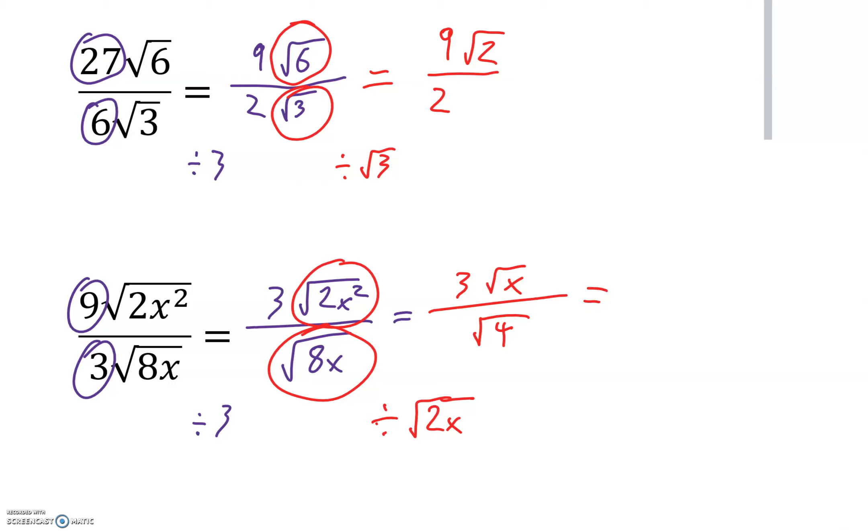What's nice about root 4 is that it can be simplified to just 2. So it's 3 root x over 2.